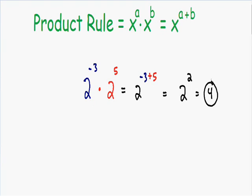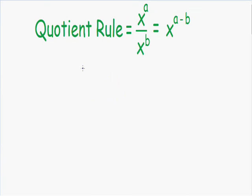I think that gives you a basic idea of the product rule. Now let's go over our next rule, which is the quotient rule. The quotient rule is very similar to the product rule — it says that if you have two exponents with a common base, you can simplify them by just subtracting the exponents.